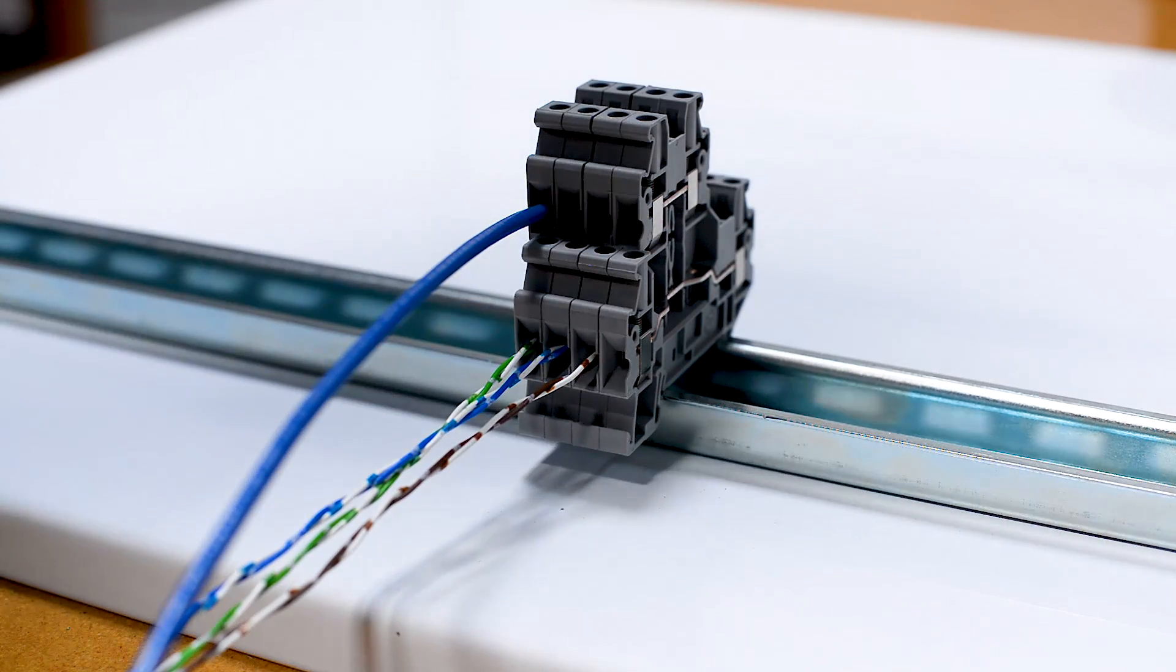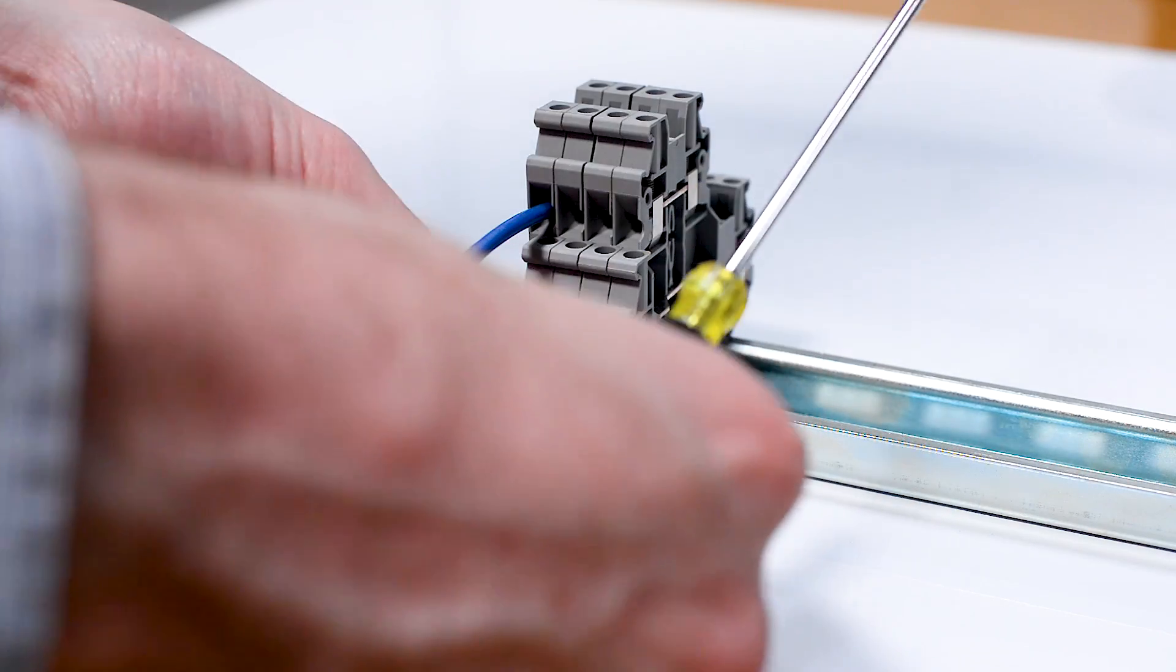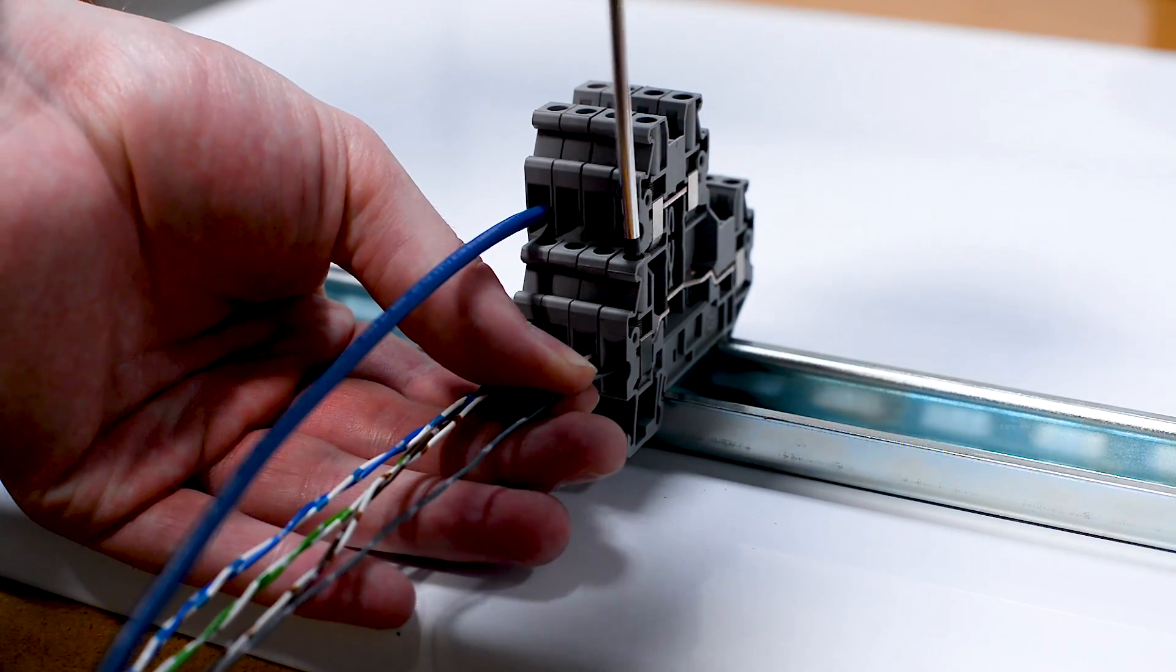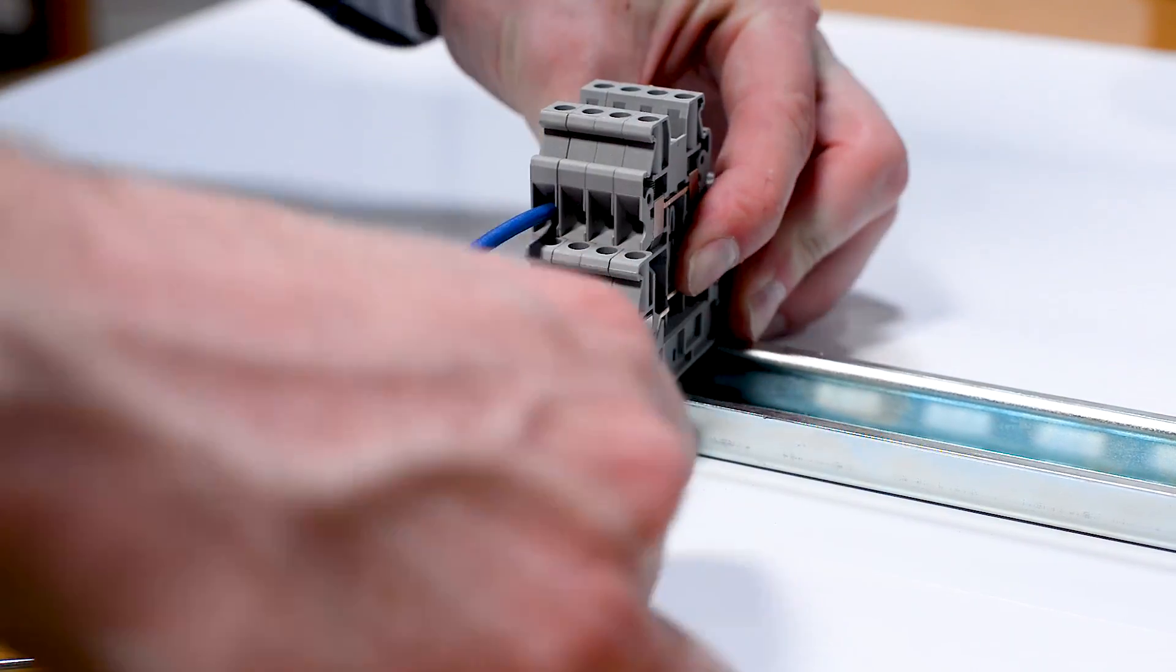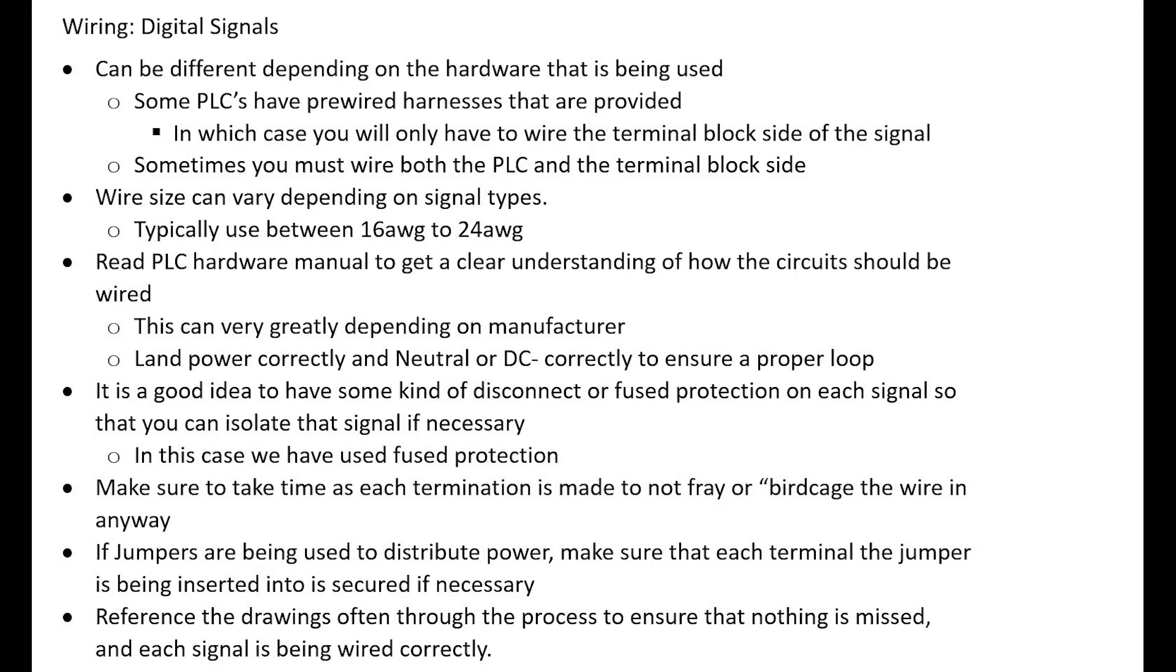And lastly, we want to make sure as always that we're referencing our drawings as often as possible throughout this process, that we're not missing any details and that we can make sure that each of our signal wires is in fact being wired correctly. If we do all this, we can be confident that we've wired all of our digital signals correctly and we can move on to the next step.